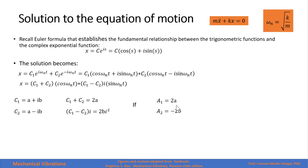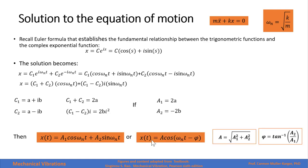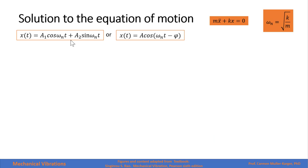Renaming the constants as a1 and a2, our solution takes the form: a1·cosine(omega_n·t) plus a2·sine(omega_n·t). We can also write this as a single cosine with a phase angle: A·cosine(omega_n·t minus phi), where A is the square root of a1 squared plus a2 squared, and the phase angle phi is the inverse tangent of a2 over a1.